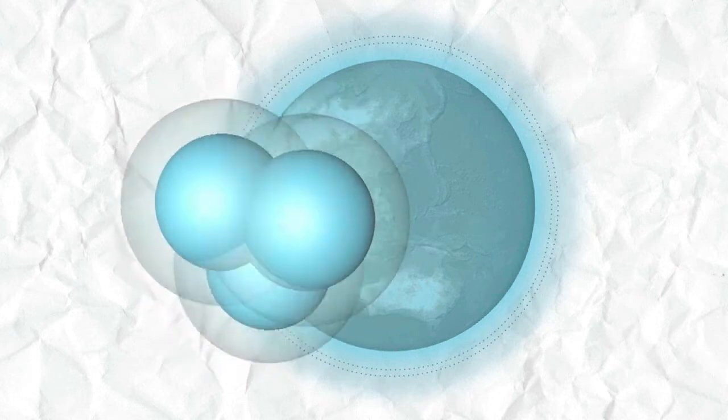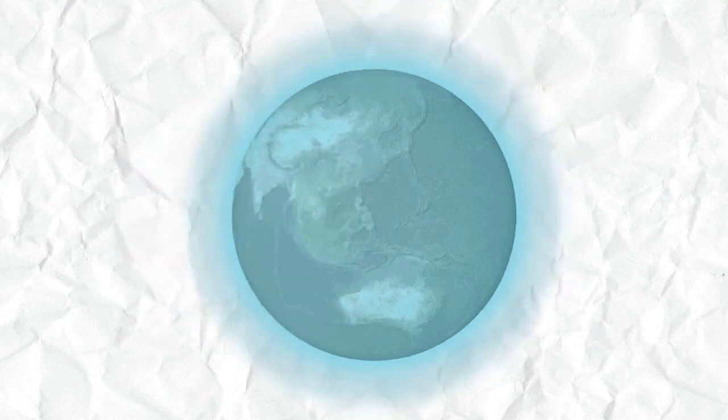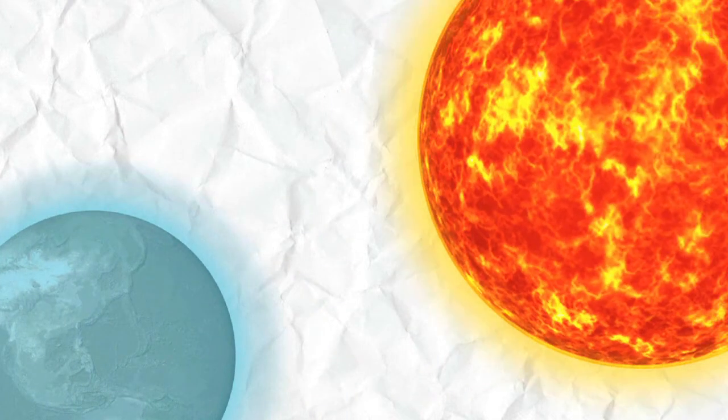Ozone is a molecule containing three oxygen atoms. It plays a key role in absorbing and therefore preventing much of the sun's radiation from reaching Earth.